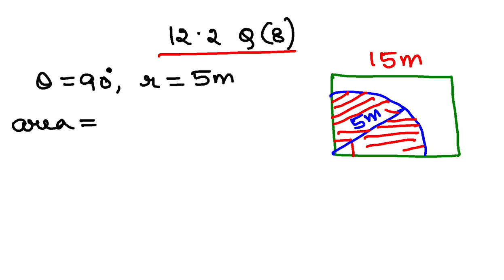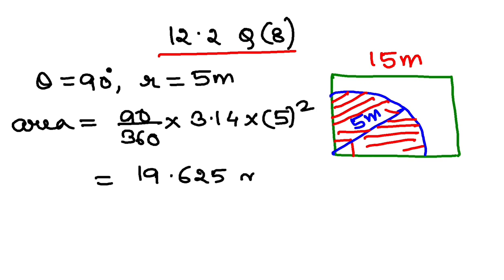The formula is 90 by 360 into pi, which is 3.14 as mentioned in the question, into radius squared. So 5 squared. If you calculate this, you should get 19.625 meter square. This is the area of the field which is available to the horse when the radius is 5 meters. This is part 1 of the question.